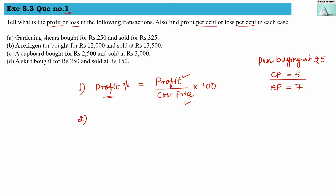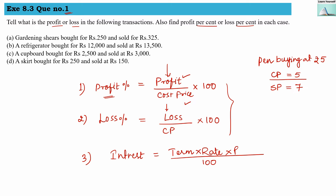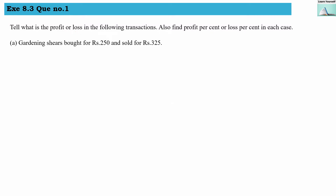The second formula is for finding loss percentage: loss divided by cost price, multiplied by 100. Both formulas are the same — you just replace profit with loss. The third formula is for finding interest using principal, rate, and term divided by 100. We will discuss that later; currently we will use the first two formulas for exercise 8.3.